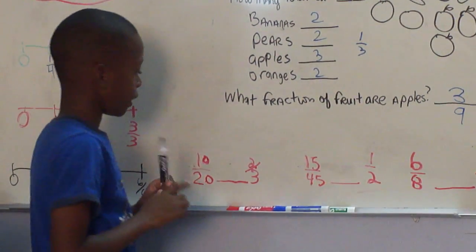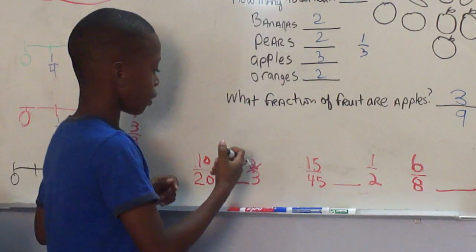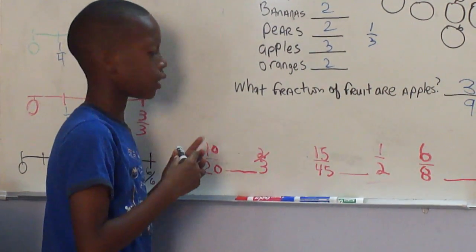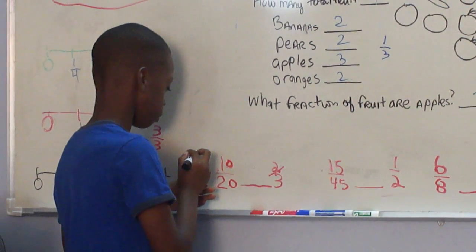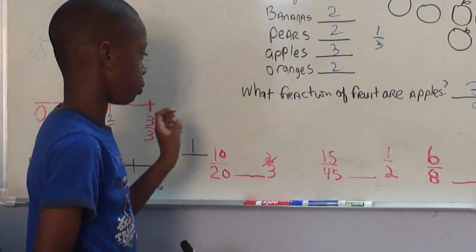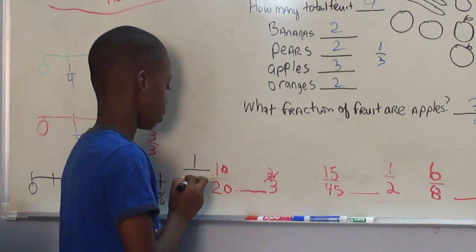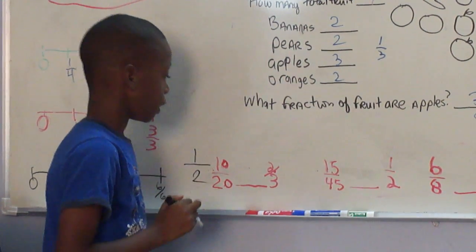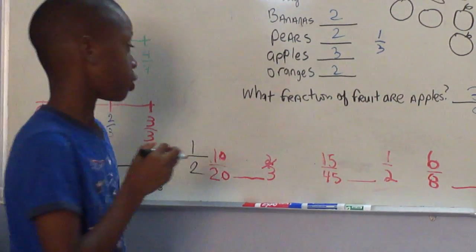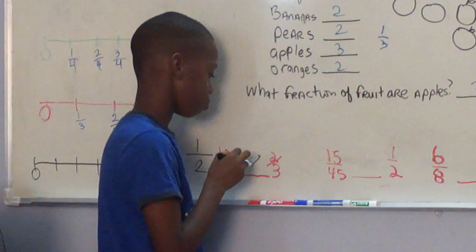10 over 20. The question is, is that greater than two-thirds, less than, or equal? 10 goes into 10 one time. 10 goes into 20 two times. And that's one-half. That's not greater than two-thirds.